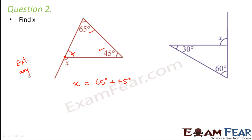So X will be equal to 65 degrees plus 45 degrees. This is as per the exterior angle property. So 65 plus 45 is 110 degrees. So X is equal to 110 degrees. Let's look at the next one.